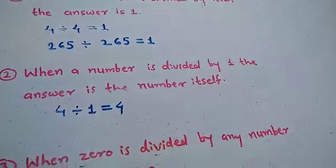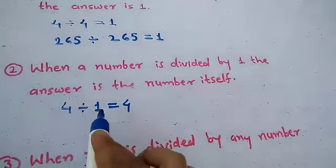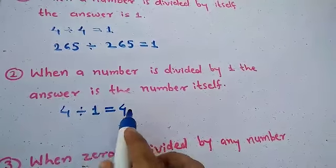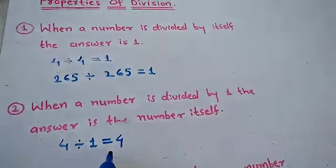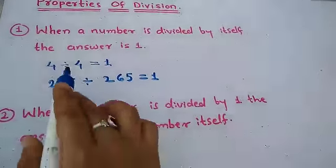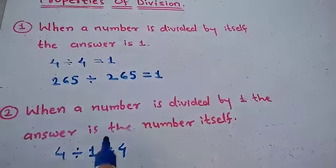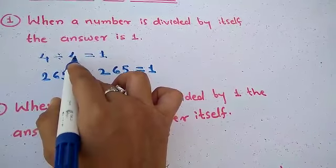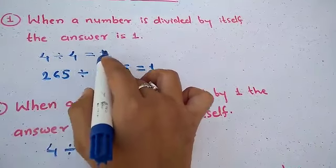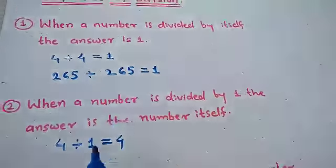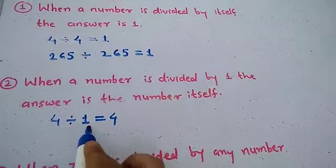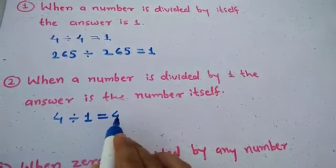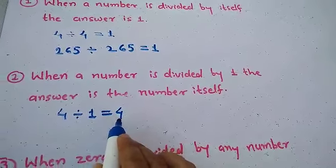When a number is divided by 1, the answer is the number itself. Look here students — in the first property, we divided by itself, so the answer was 1. And here, we divided by 1, so the answer is the number itself.